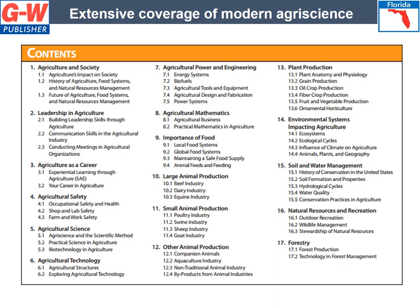Written by leaders in agriculture and education, Principles of Agriculture, Food, and Natural Resources provides a fresh, visual, and highly applied introduction to the systems and concepts that define modern agriculture, including food systems and natural resources.